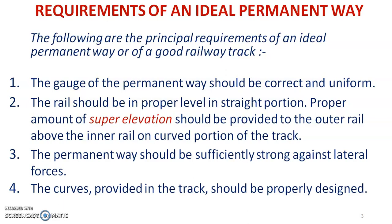What are the requirements of an ideal permanent way? It should maintain the gauge in a correct and uniform distance. Gauge is the inner-to-inner distance between the two rails. The top of the rail should be at the same level in a straight track. On curves, proper super elevation should be provided. All the component parts in the permanent way should be accurately designed, so it will be able to transfer the load from the train to the rail, from the rail to the sleeper, from the sleeper to the ballast, and from the ballast to the subgrade.